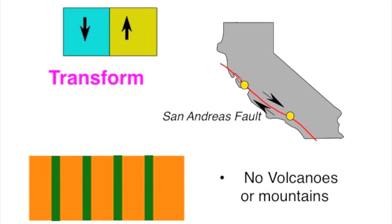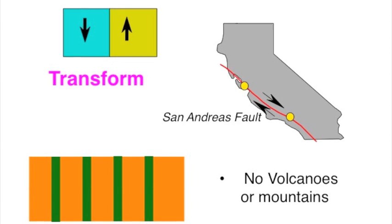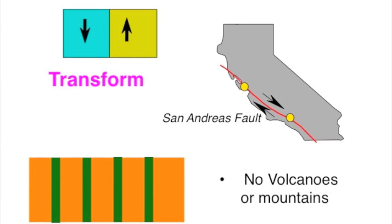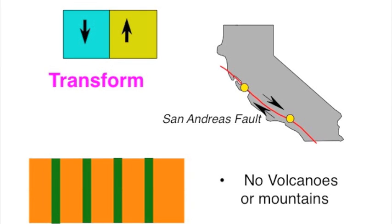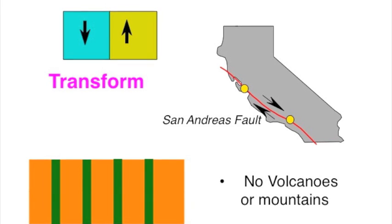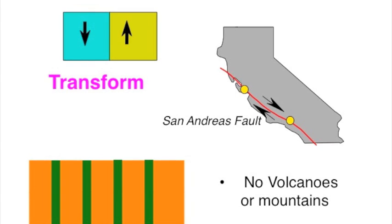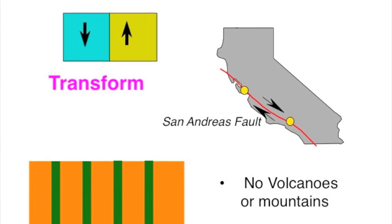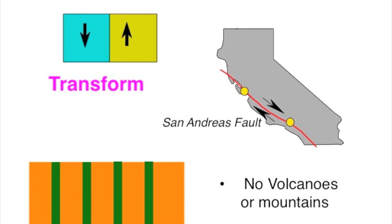We will begin by looking at the transform boundary. It's probably the easiest to understand. In a transform boundary, we see that there is a fault line between two different plates, and this fault line will cause the two plates to slide past each other. A good example of this is the west coast of California, the San Andreas Fault, where you have the two arrows pointing in different directions and the plates slide past each other.